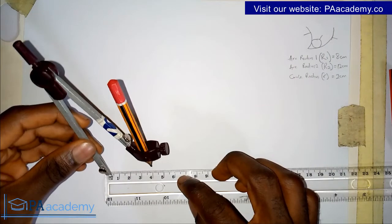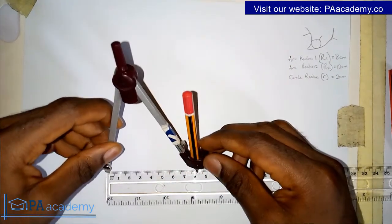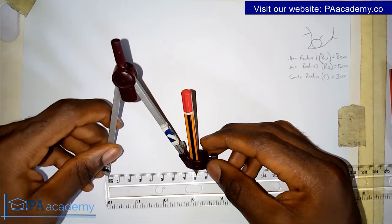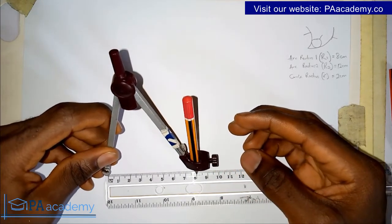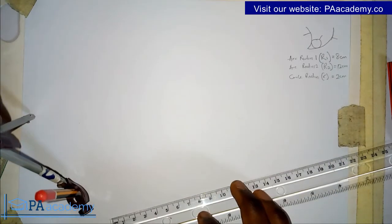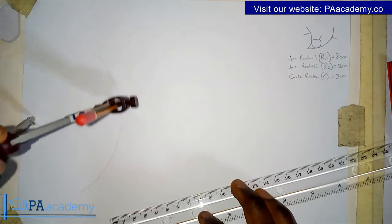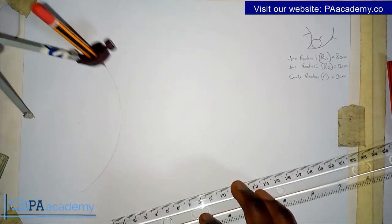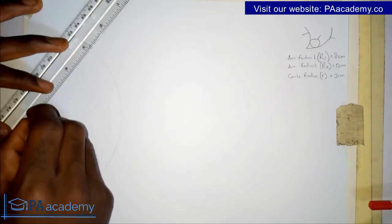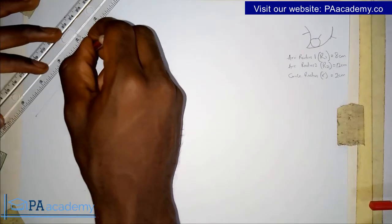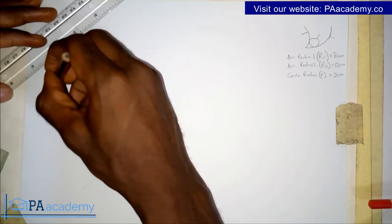To start with, I'm going to draw the arc with the radius of 8 cm. I pick my compass and use it to measure a length of 8 cm. This is the arc with the radius of 8 cm. From the center point to the arc itself, this represents our R1, which is 8 cm.